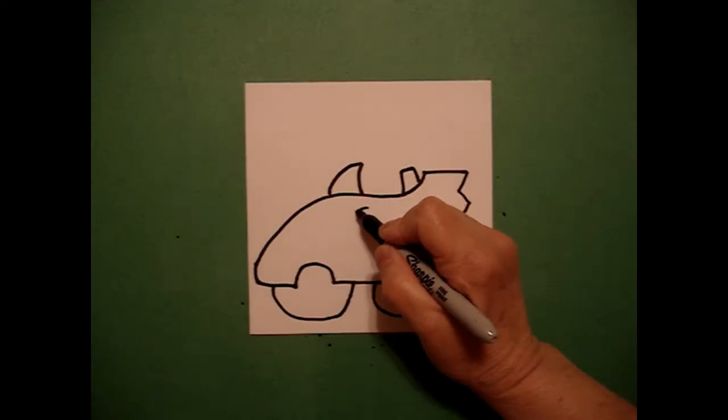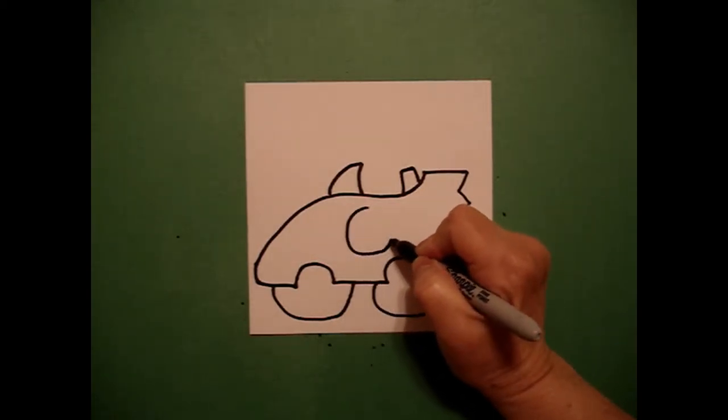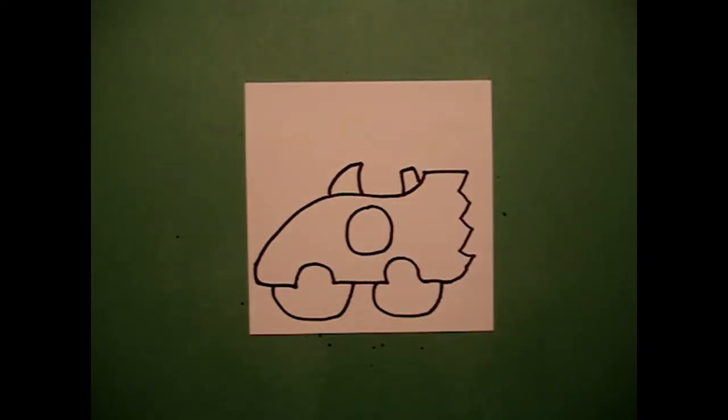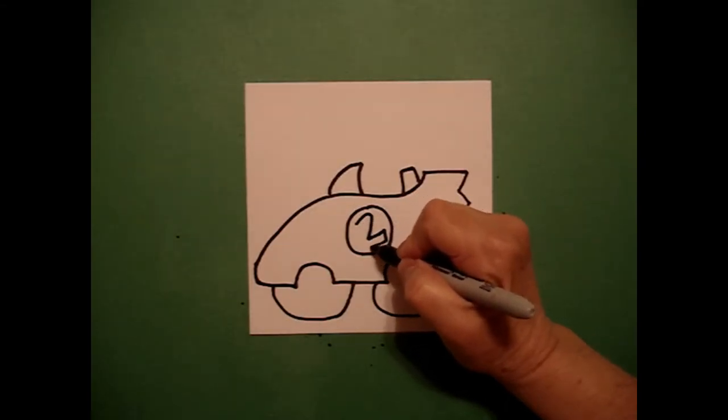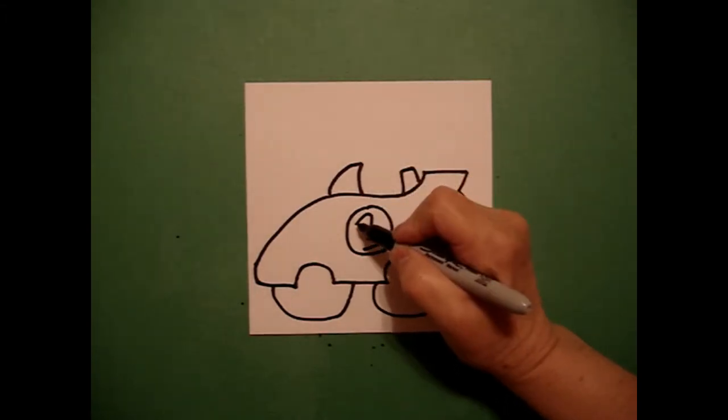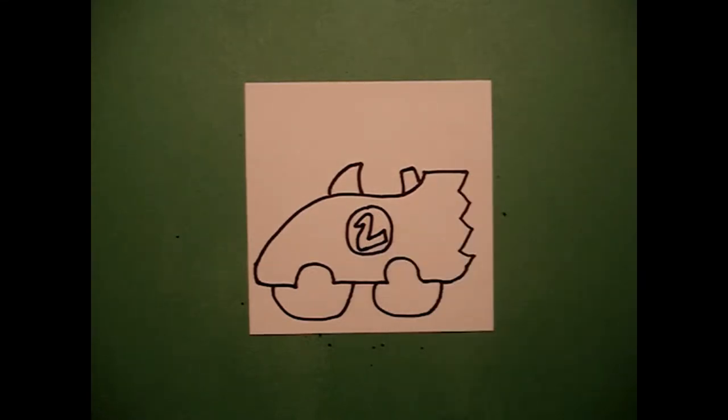Right about here in the center, I'm going to draw a circle. And inside the circle, I'm going to draw a number two. So I go curved line up, curved line down, straight line, straight line, straight line. Come back to the top, curved line, curved line, connect.